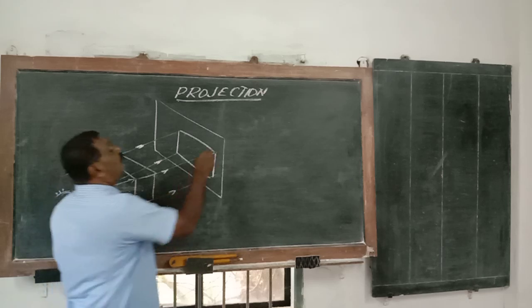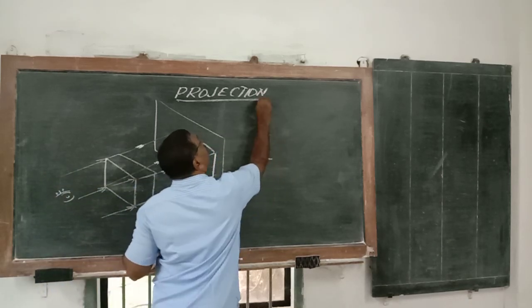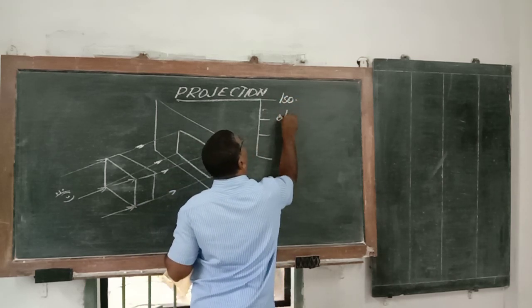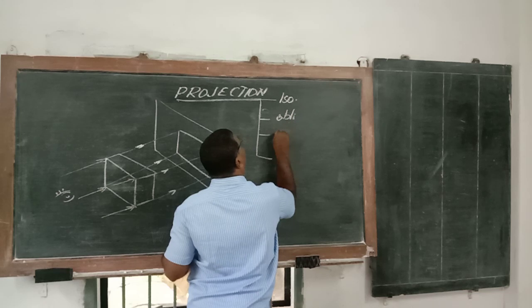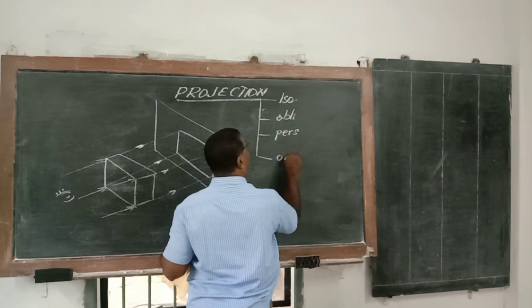This projection has four types: one is isometric projection, second is dimetric projection, third one is perspective projection, fourth one is orthographic projection.